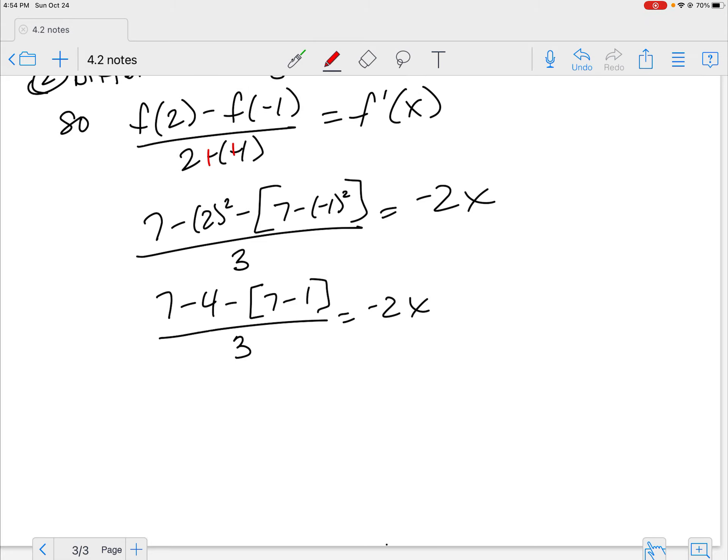So we've got all that over 3 is equal to a negative 2X. Check this out. This is even nicer. If I add the opposite of this, the plus 7 and minus 7 cancel. Negative 4 plus 1 is going to be negative 3 over 3. So negative 1 is equal to a negative 2X. Now it's simplified, so I divide both sides by a negative 2, and X is equal to a 1 half.